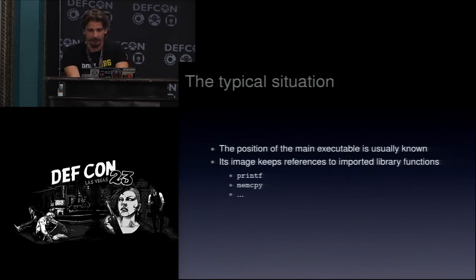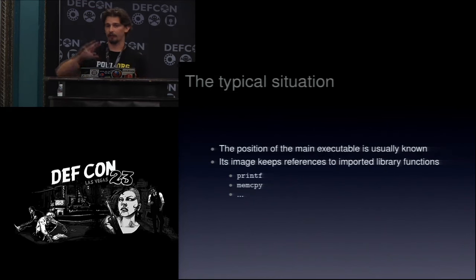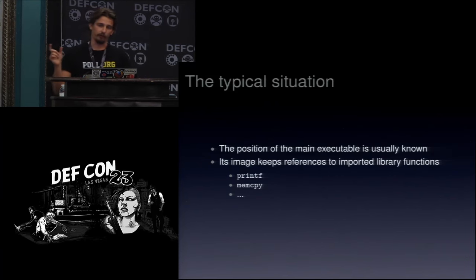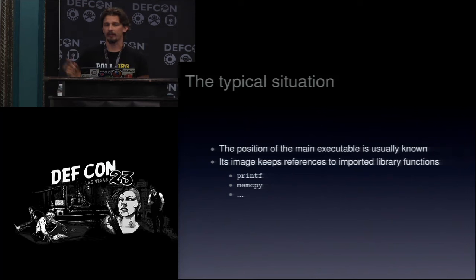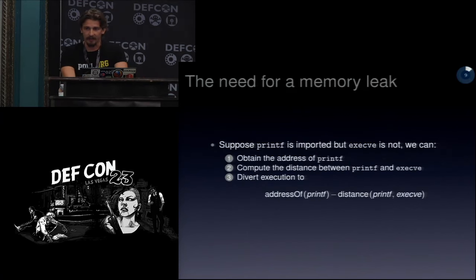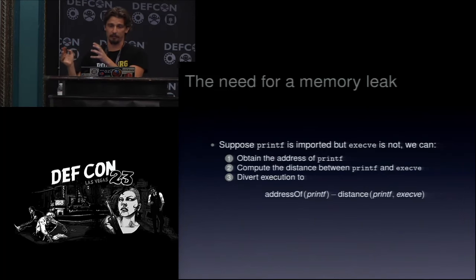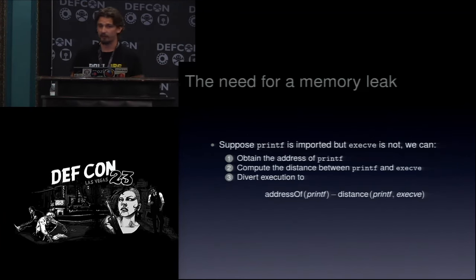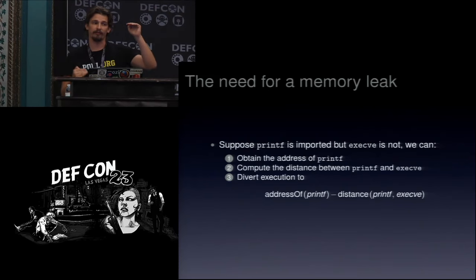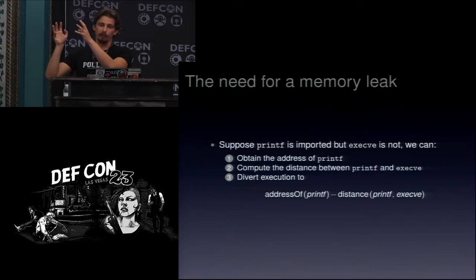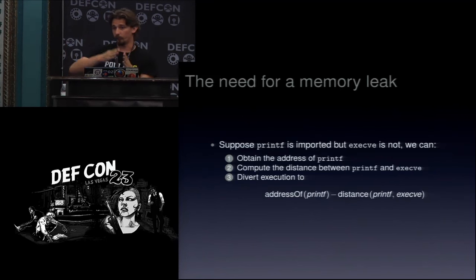The typical way to get around ASLR is to use functions that are already imported. The main executable keeps in memory a reference to functions like printf, which holds their address. So the typical approach to bypass ASLR is: read the address of printf imported by the main binary, then compute the distance between printf and another function like system or execve in the C standard library, add that distance to reach execve, and call it.